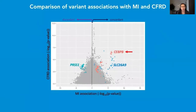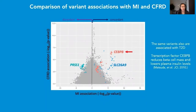Regarding CEBPB, these variants also associate with type 2 diabetes. The variants surround the CEBPB gene, which encodes for a transcription factor that has been shown to reduce beta cell function and lower plasma insulin levels. This might be how these variants are influencing diabetes.